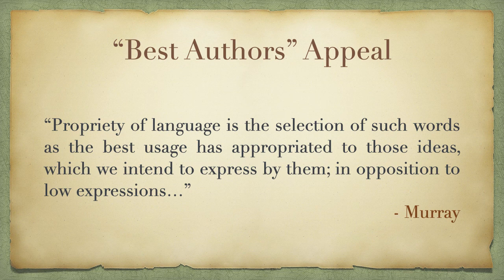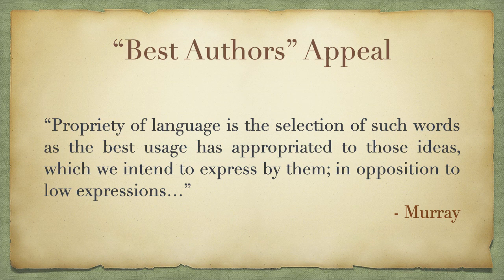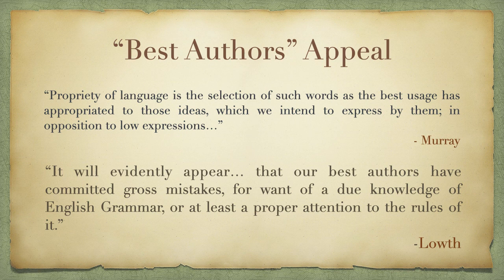One common justification for choosing one usage to be correct and another to be incorrect is to look at what they called the work of the best authors. The idea is that the people we respect as writers of English are the ones whose usage we should take as a model. You can see this in this quote from Murray, who writes: 'Propriety of language is the selection of such words as the best usage has appropriated to those ideas which we intend to express by them, in opposition to low expressions.' You can get a sense of the classism involved — he's talking about the kind of people who would use 'best usage' as opposed to 'low expressions.' There's clearly a class dimension to this issue in his view.